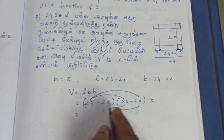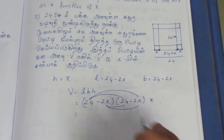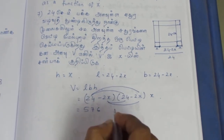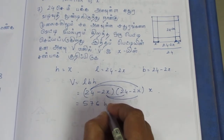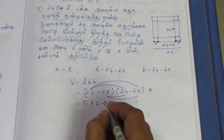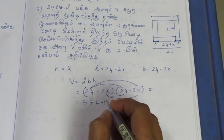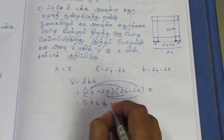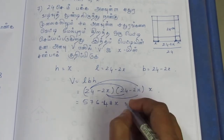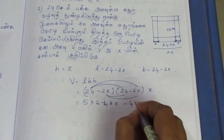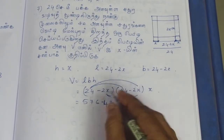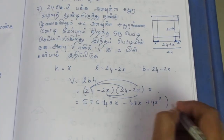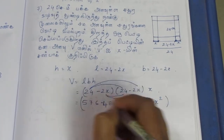We multiply (24 minus 2x) into (24 minus 2x): 24 into 24 is 576, minus 24 into 2x is 48x, this is minus 48x, and minus into minus gives plus 4x². Then multiply this total by x.